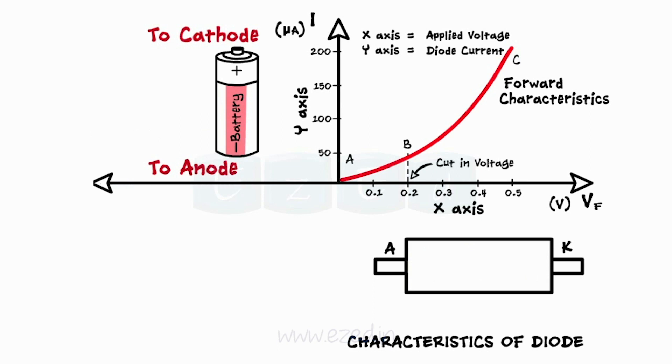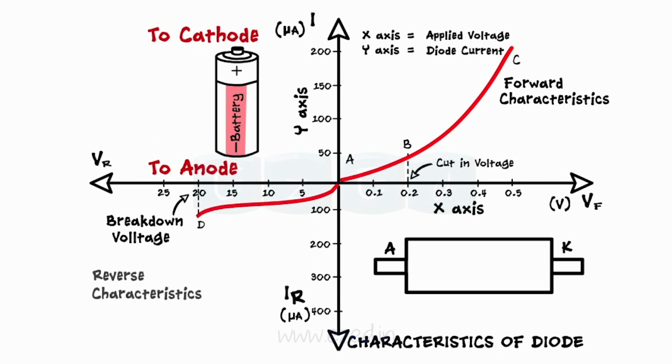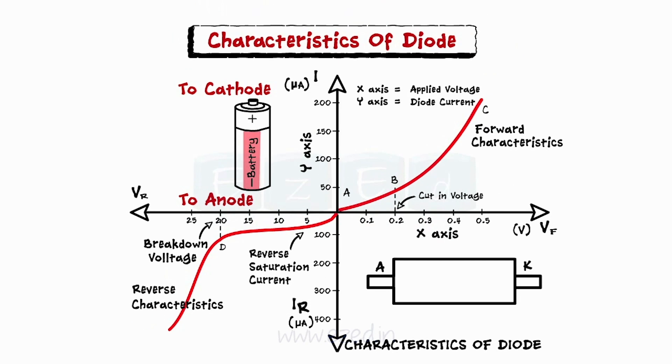When we connect the diode in reverse bias, the leakage current flows in the opposite direction till point D. But if we further increase the reverse voltage applied, at one point the diode breaks down and a large amount of reverse current flows through it, which may damage the component. This value of reverse voltage is called the breakdown voltage.